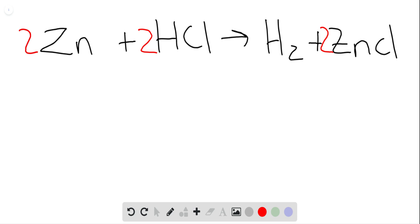So there's a couple ways we can say this equation. We can say for every two moles of zinc and two moles of hydrochloric acid, I would produce one mole of hydrogen gas and two moles of zinc chloride.